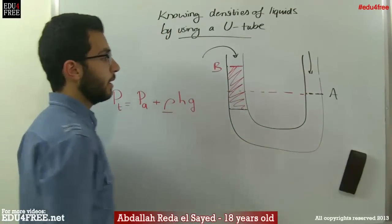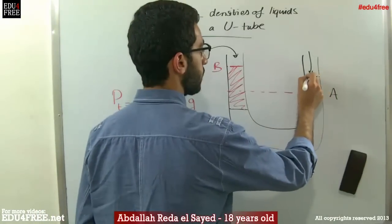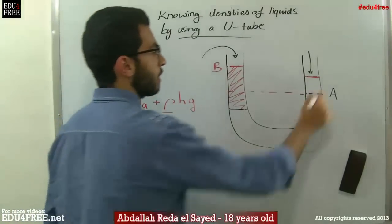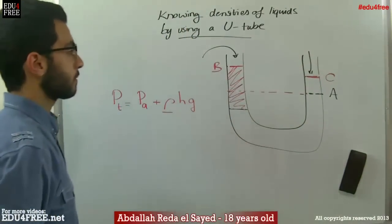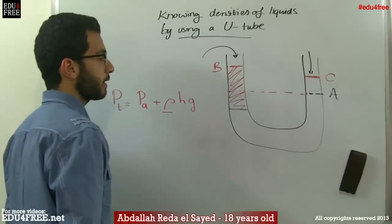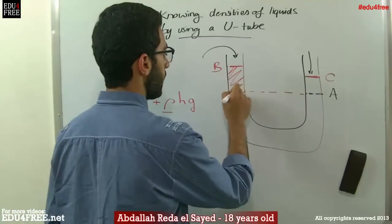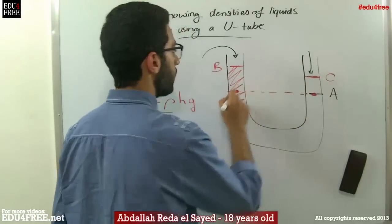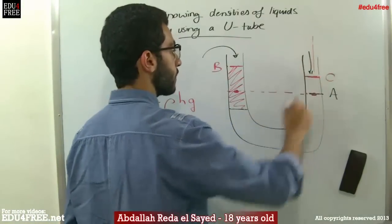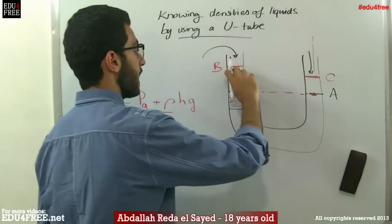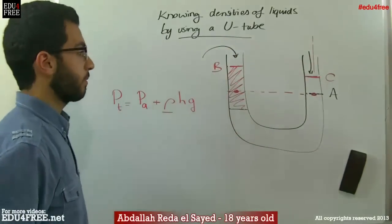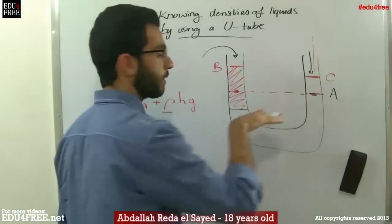Originally water was here, and then it became here when the liquid was added. Let's call this other point C. If we calculate the pressure at both points, they will be the same — because here we have water plus the atmospheric pressure, and here we have the liquid that we added plus the atmospheric pressure, and both points are on the same surface.